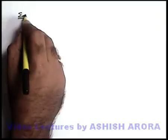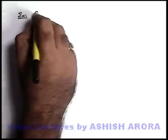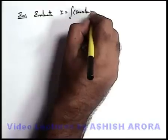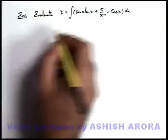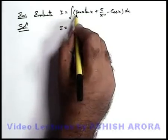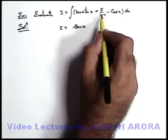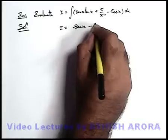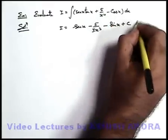Let's discuss some more examples on integration by direct formulas. We are required to find I = ∫(sec x·tan x + 5/x⁴ − cos x)dx. Integration of sec x·tan x = sec x. The second term is 5x^(−4), so using x^n we get 5·x^(−3)/(−3) = −5/(3x³). Integration of cos x = sin x. So the answer is sec x − 5/(3x³) − sin x + C.